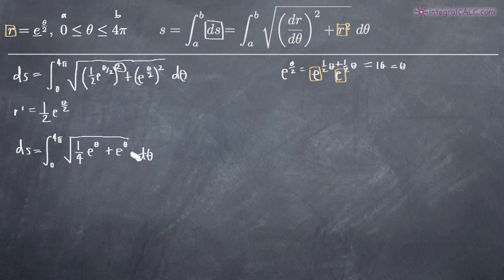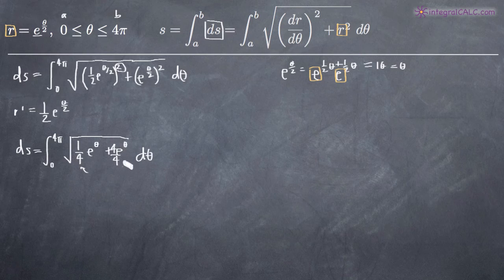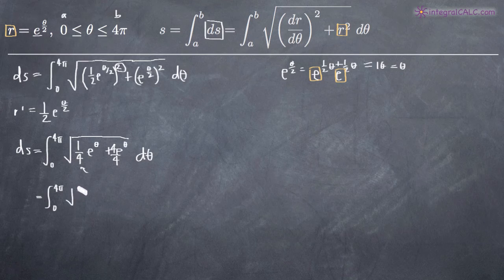So now we can combine these two terms into one fraction underneath the square root sign. We'll put four over four in front of the second term to get a common denominator with our first fraction. Since our first fraction was over four, we put the second term over four as well — four over four is just equal to one. So we end up with the integral from zero to four pi of the square root of five-fourths e to the theta dθ, since one-fourth plus four-fourths is five-fourths.